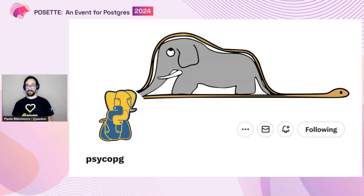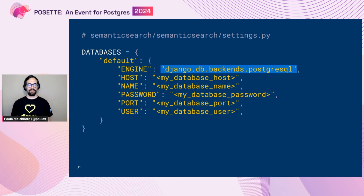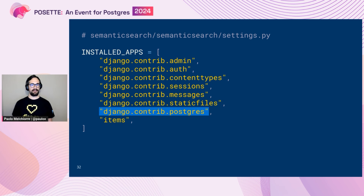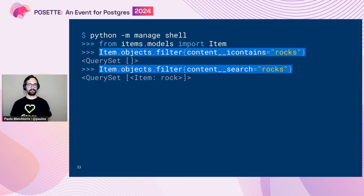Now we want to start using a very specific Postgres feature. To do that, we have to install Psycopg. We can install the binary version of the module, which is very convenient for development purposes. After that, we have to update our settings file in the Django project to add a different engine — postgresql — and add all the required parameters to connect with the database, whether it's local, remote, or in Docker.